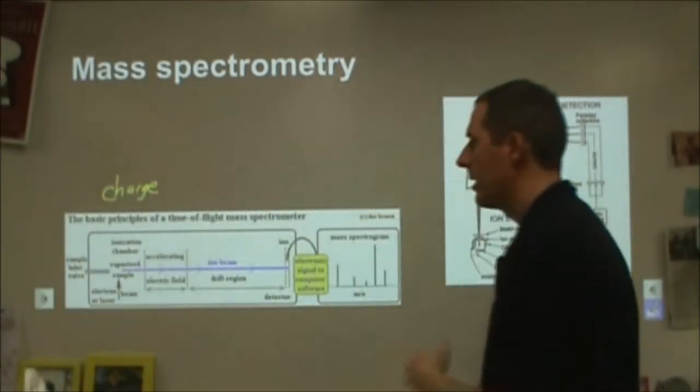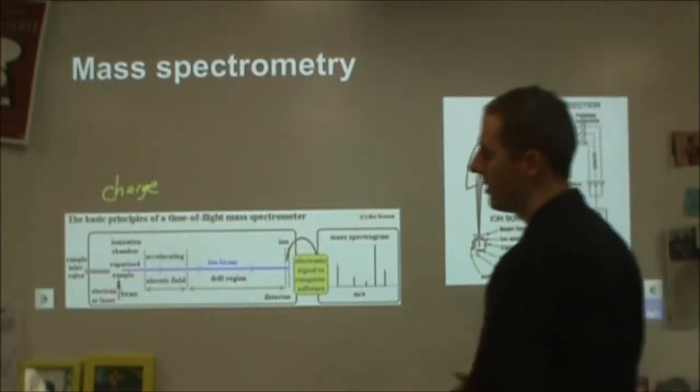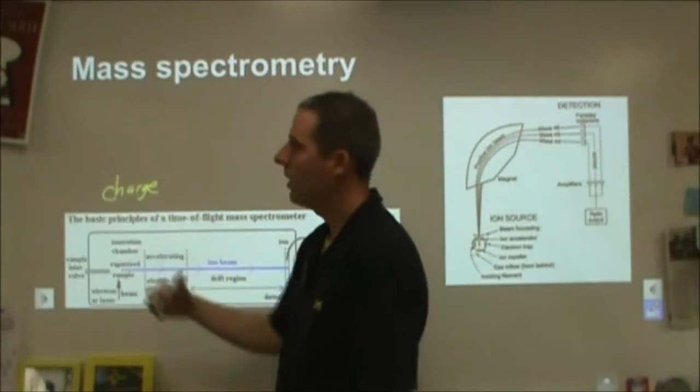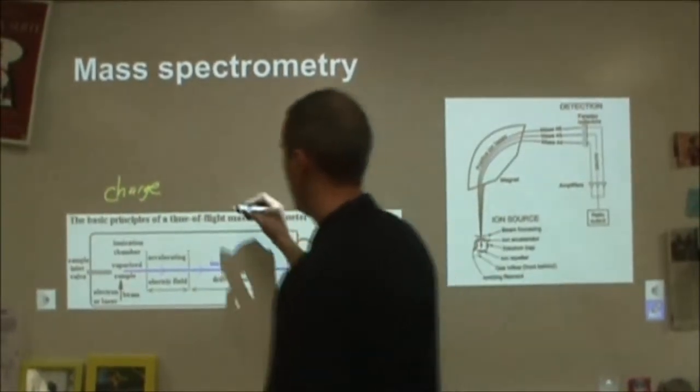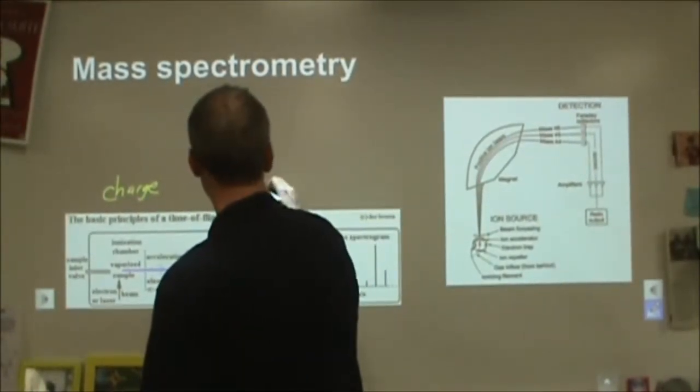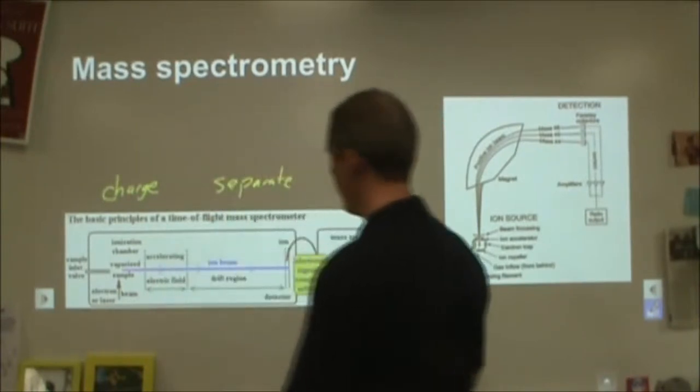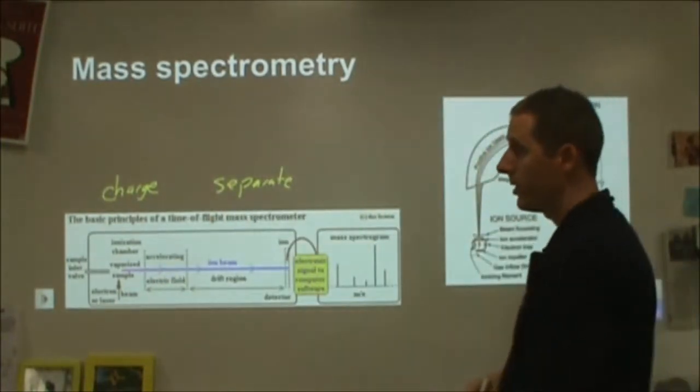There are different ways that can happen. You can send a beam of electrons through it. You can use acid-base chemistry, but you have to charge your samples. Then, in the second phase, you separate the samples based on that mass to charge ratio. So there are different ways to do each of these.